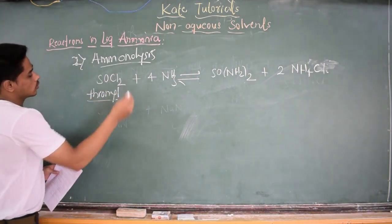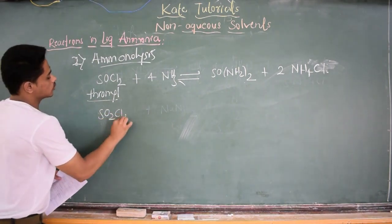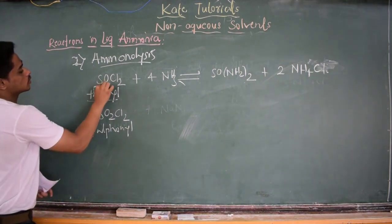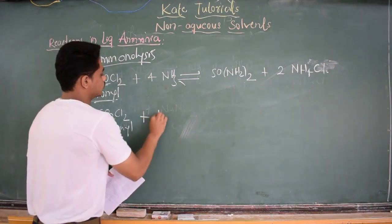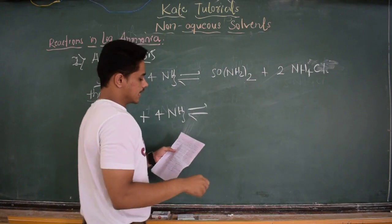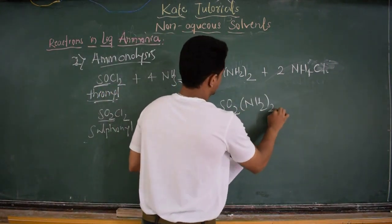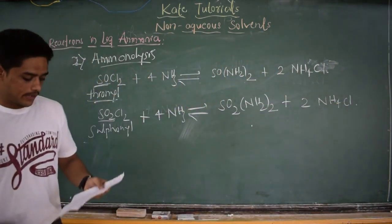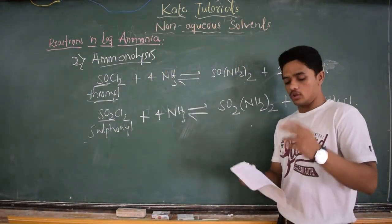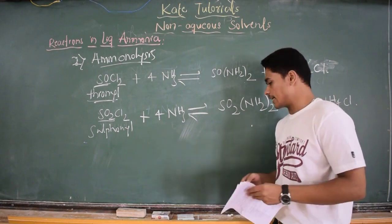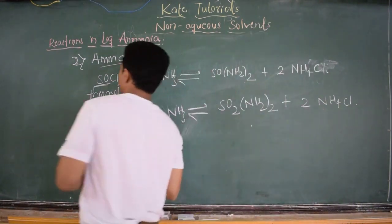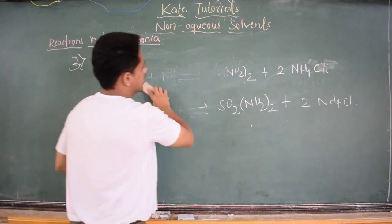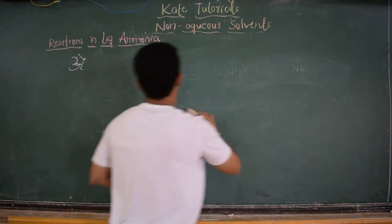Instead of thionyl chloride, let me consider sulfonyl chloride, that is SO₂Cl₂. SO means thionyl; SO₂ means sulfonyl. This sulfonyl chloride reacts with 4 moles of ammonia to give SO₂(NH₂)₂ plus 2 molecules of ammonium chloride. This is also aminolysis in the case of liquid ammonia.